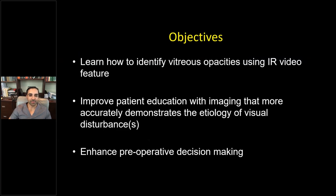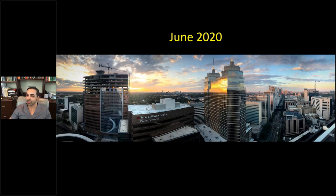Our objectives for today's talk: number one, we're going to learn how to identify vitreous opacities using the infrared video feature on the Heidelberg unit. After that, we'll learn about how we could use imaging — OCT and other modalities — to improve patient education that more accurately demonstrates the etiology of a visual disturbance. And finally, we'll discuss how imaging enhances preoperative surgical decision-making. I have a lot of interesting cases to go through and will touch on all three sections.